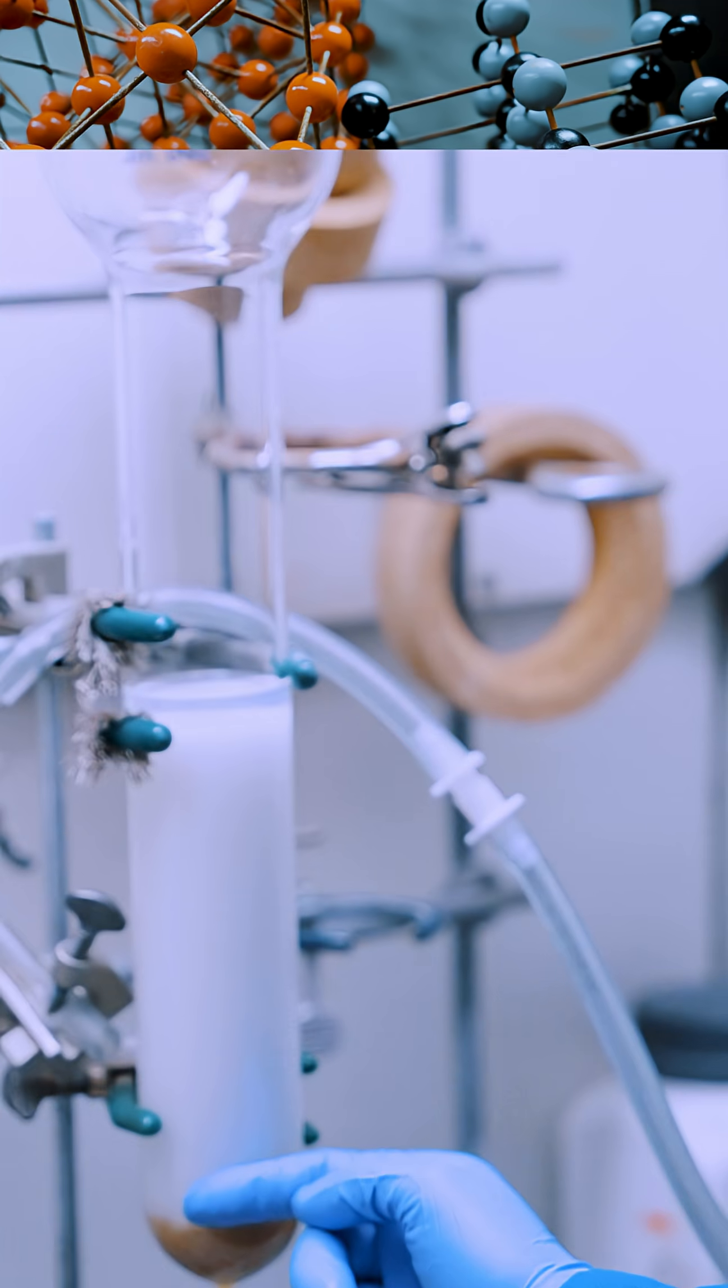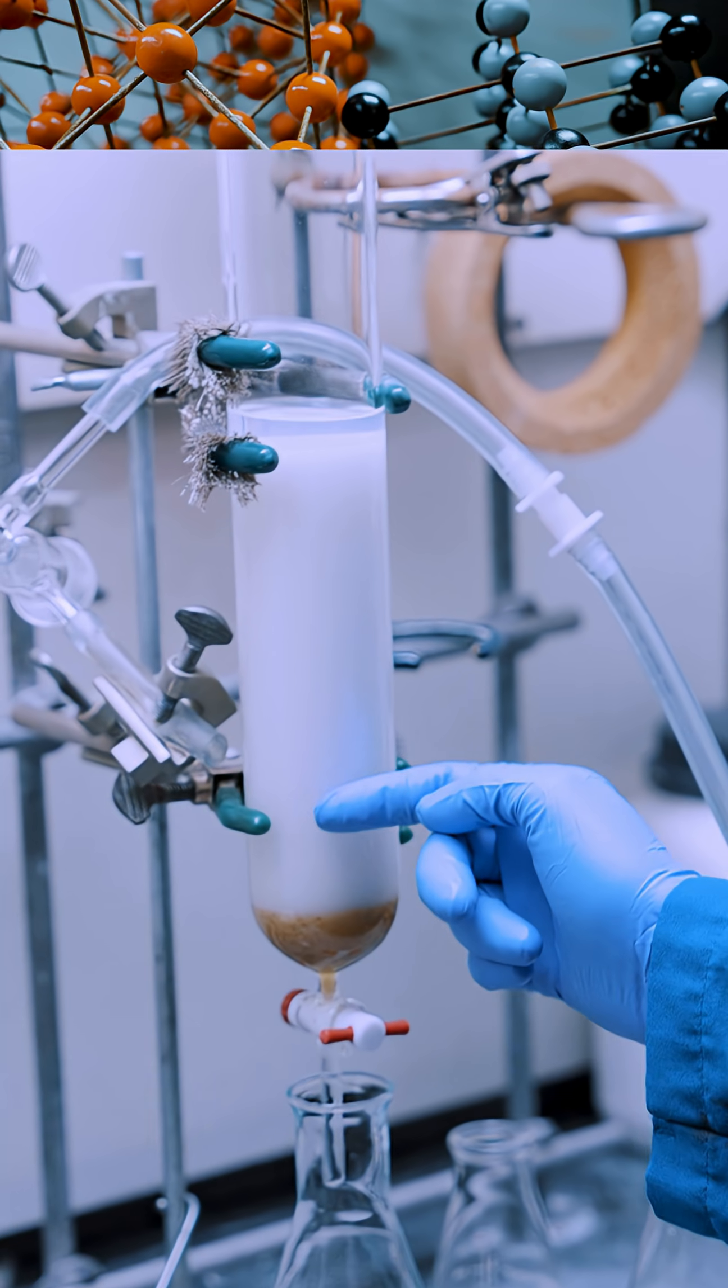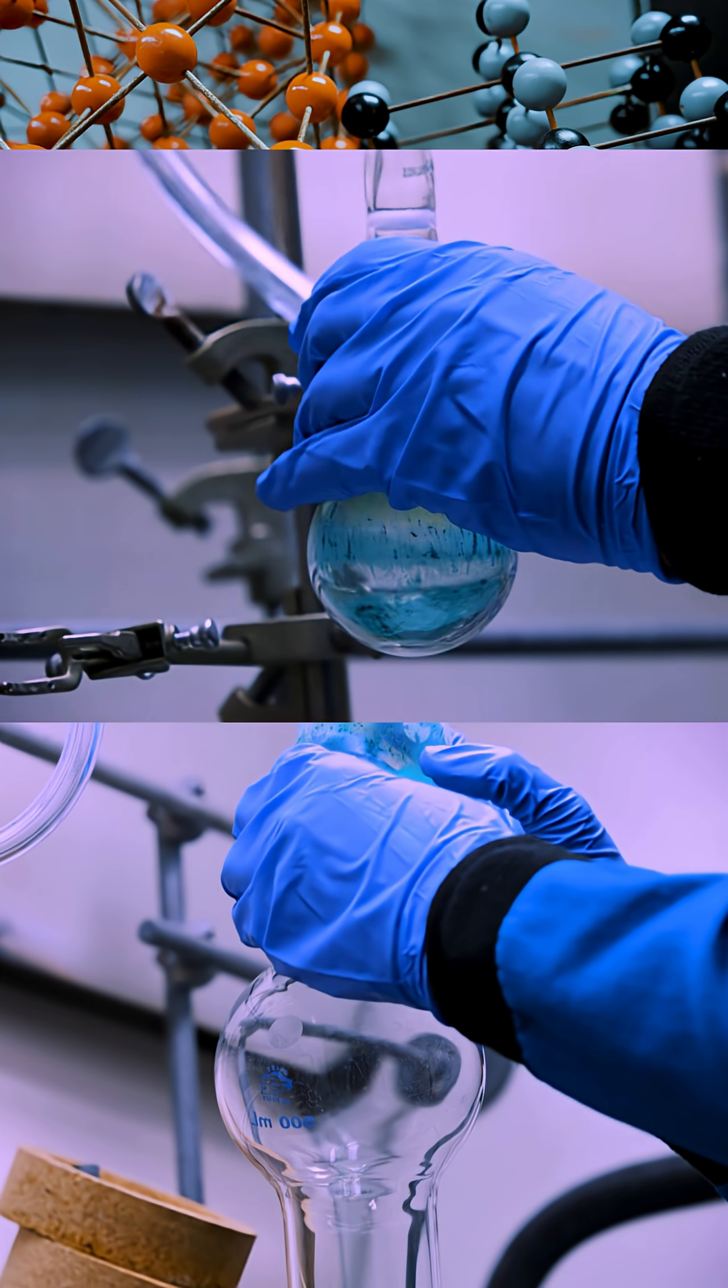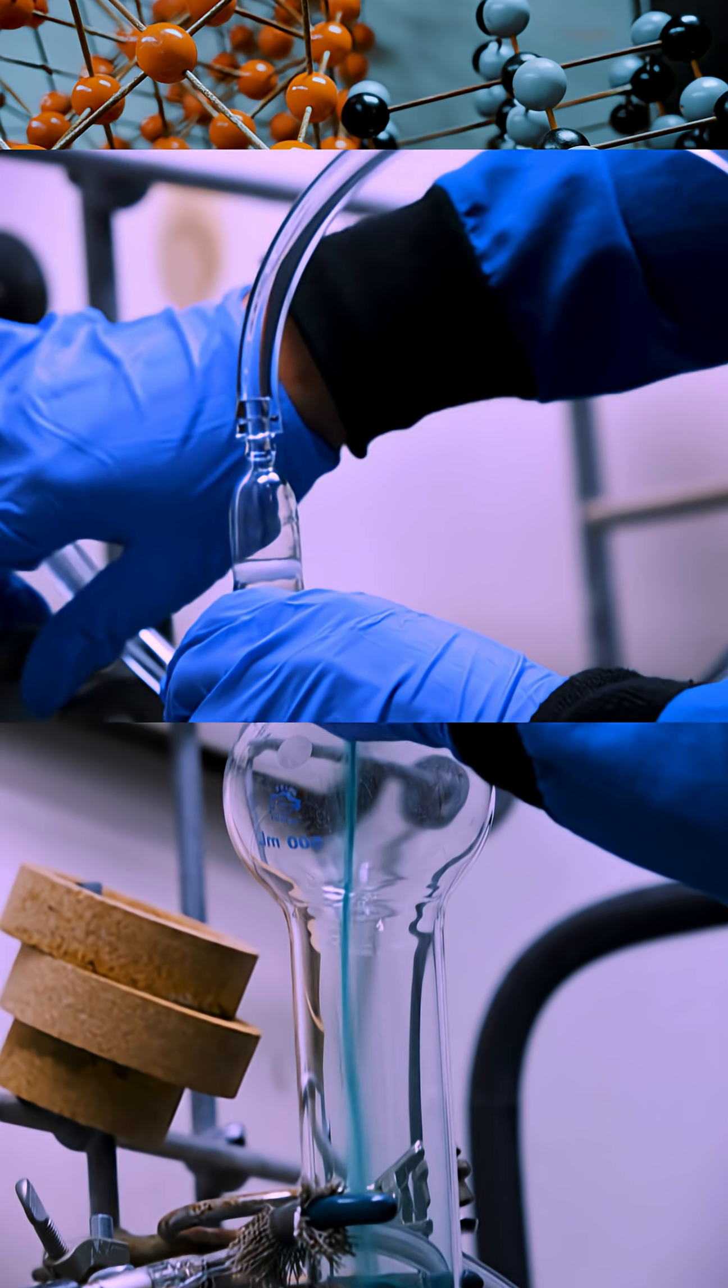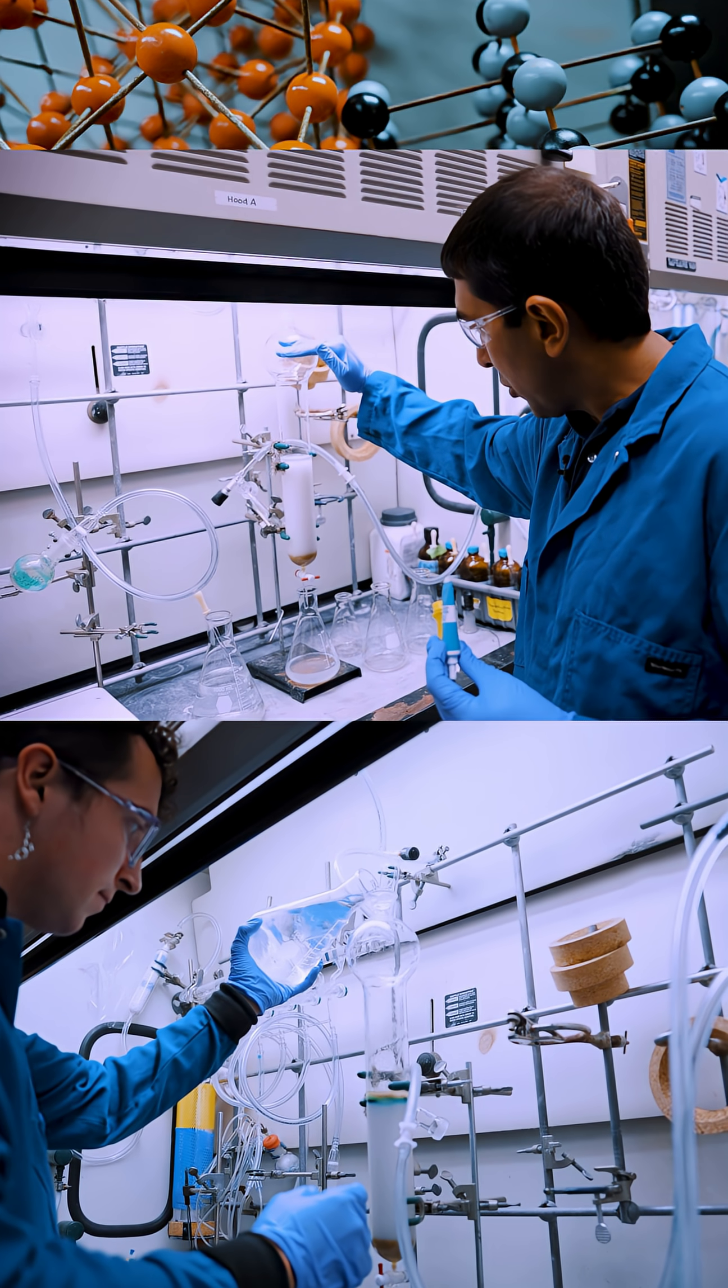And this is what we call column chromatography. The white material is called silica gel. The green mixture over here is going to be put on top. We'll put solvent on the top and push it down.